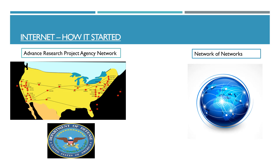First, let's talk a little bit about the history of the internet — how it started. The internet was the result of another experiment called the Advanced Research Project Agency Network (ARPANET). This was a research project undertaken by the Department of Defense of the United States of America. They were trying to see how, in the event of a nuclear attack, communication would not break — how networks would still stay connected.